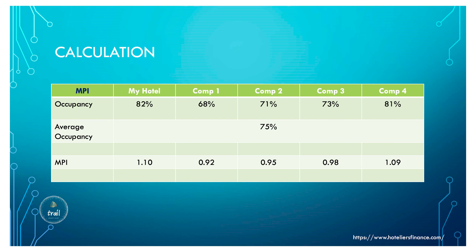Let's talk about occupancy first. We call it MPI — Market Penetration Index — measuring how much occupancy I'm gaining within the competition. My hotel is at 82%, competition one 68%, competition two 71%, competition three 73%, and competition four 81%. The average across all five hotels is 75%. My hotel's 82% divided by 75% gives an MPI of 1.10, meaning I'm gaining 10% more than my fair market share.